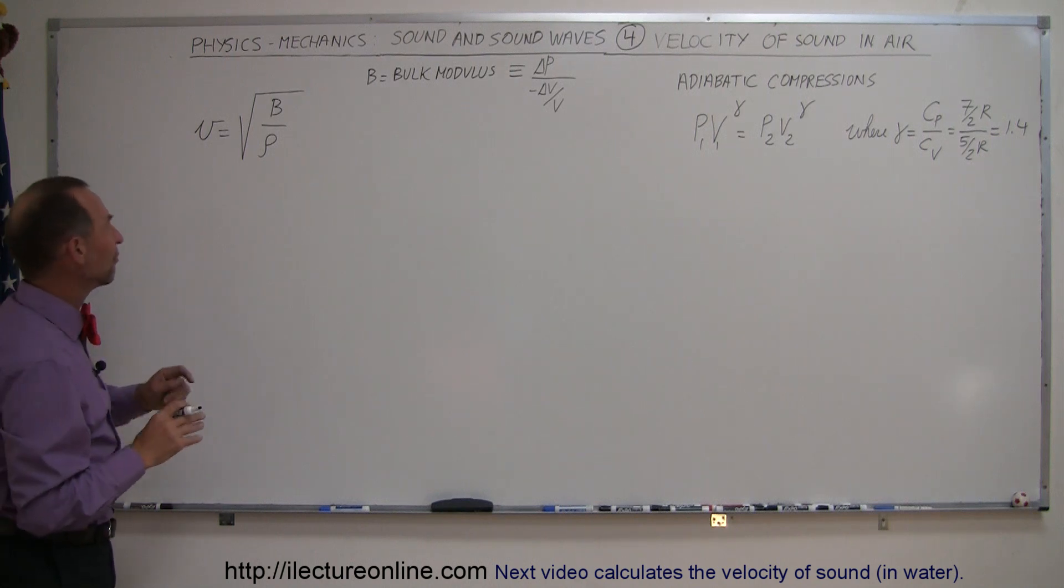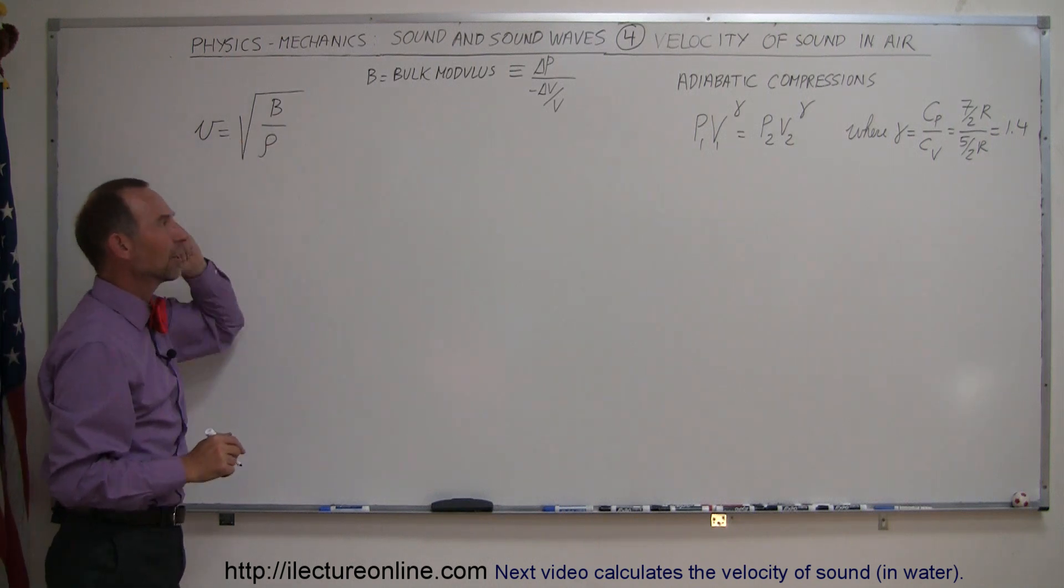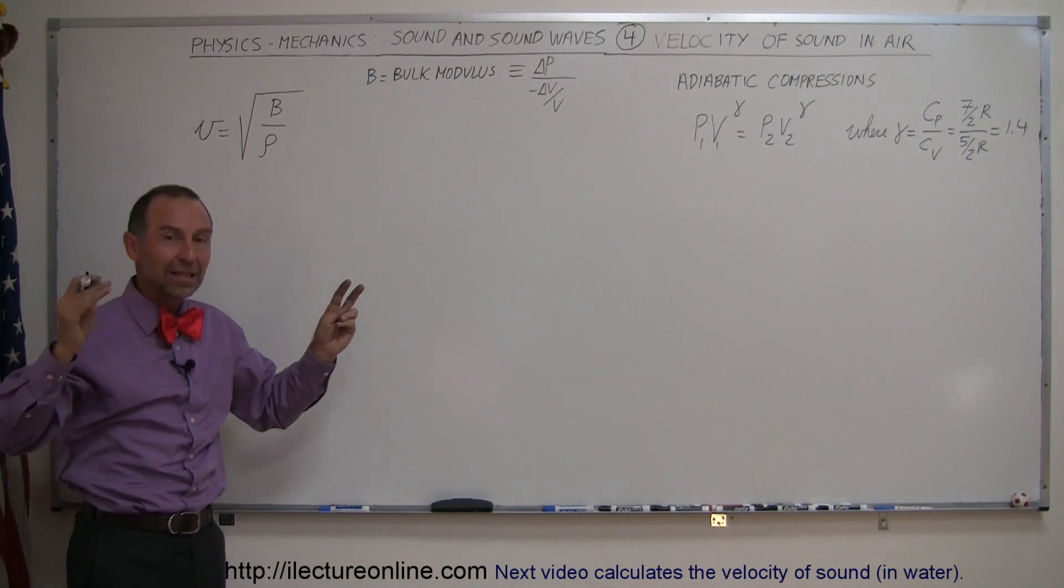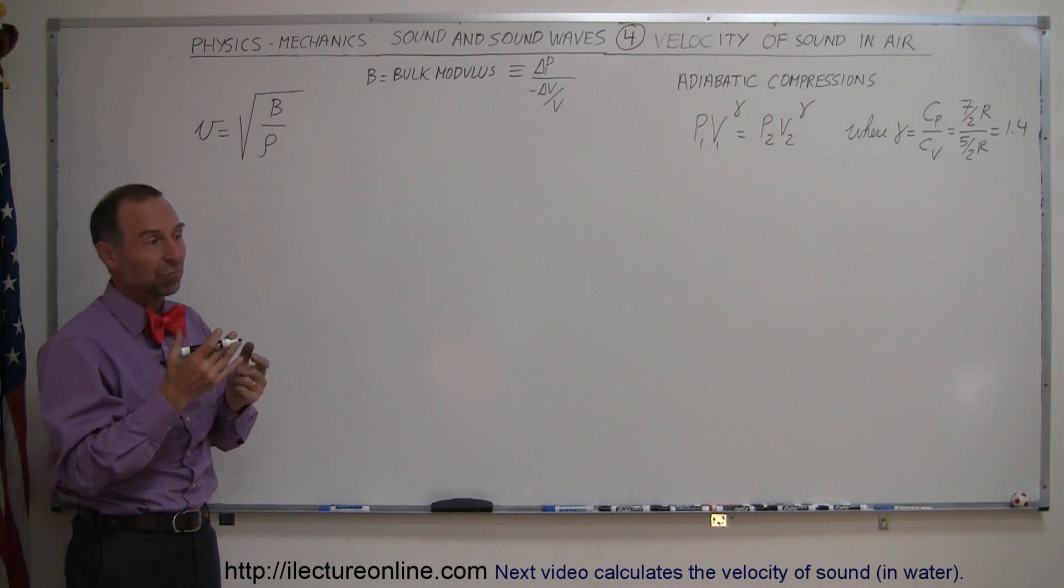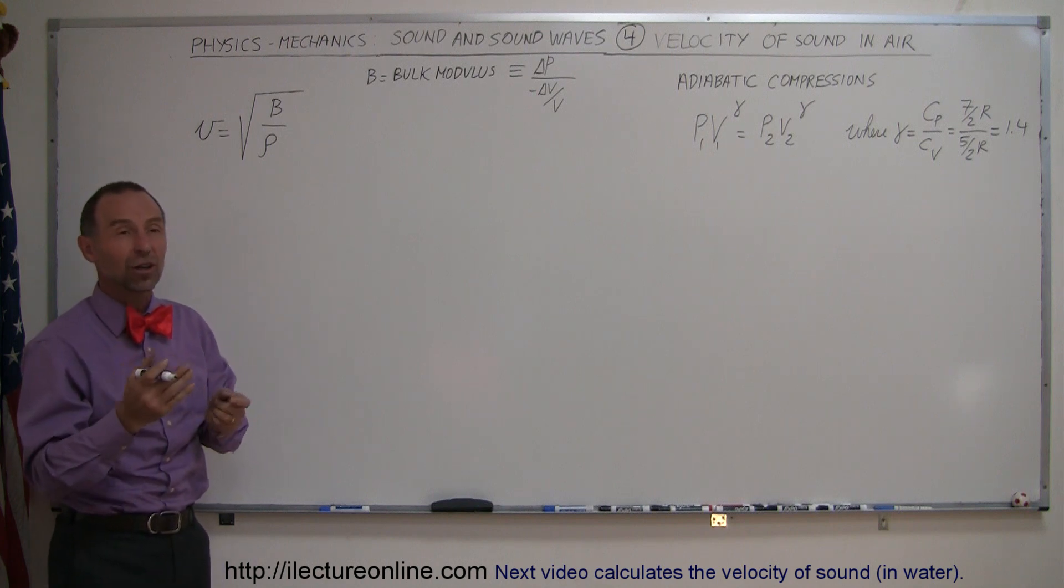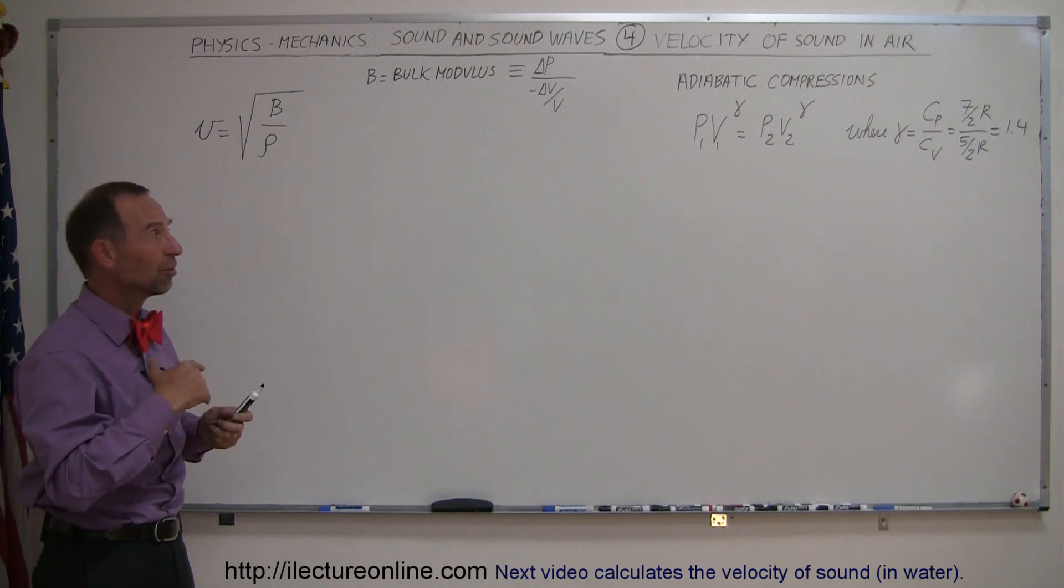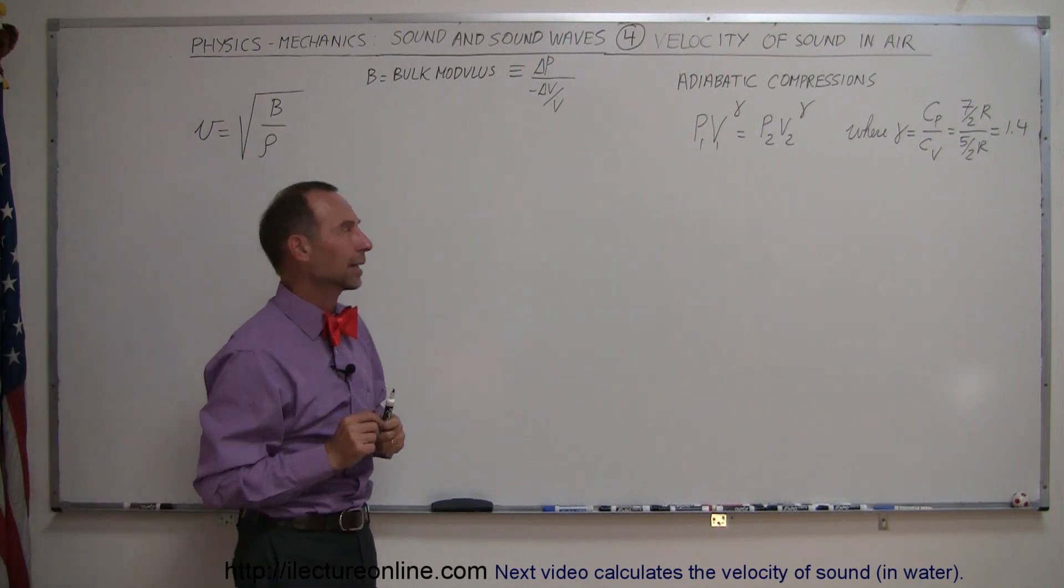To find the bulk modulus for air, we have to think about what really happens here. When sound is made, the vibrations are at frequencies of hundreds of hertz, hundreds of times per second. These are very fast vibrations and very fast compressions. The compressions happen so quick that they're adiabatic.